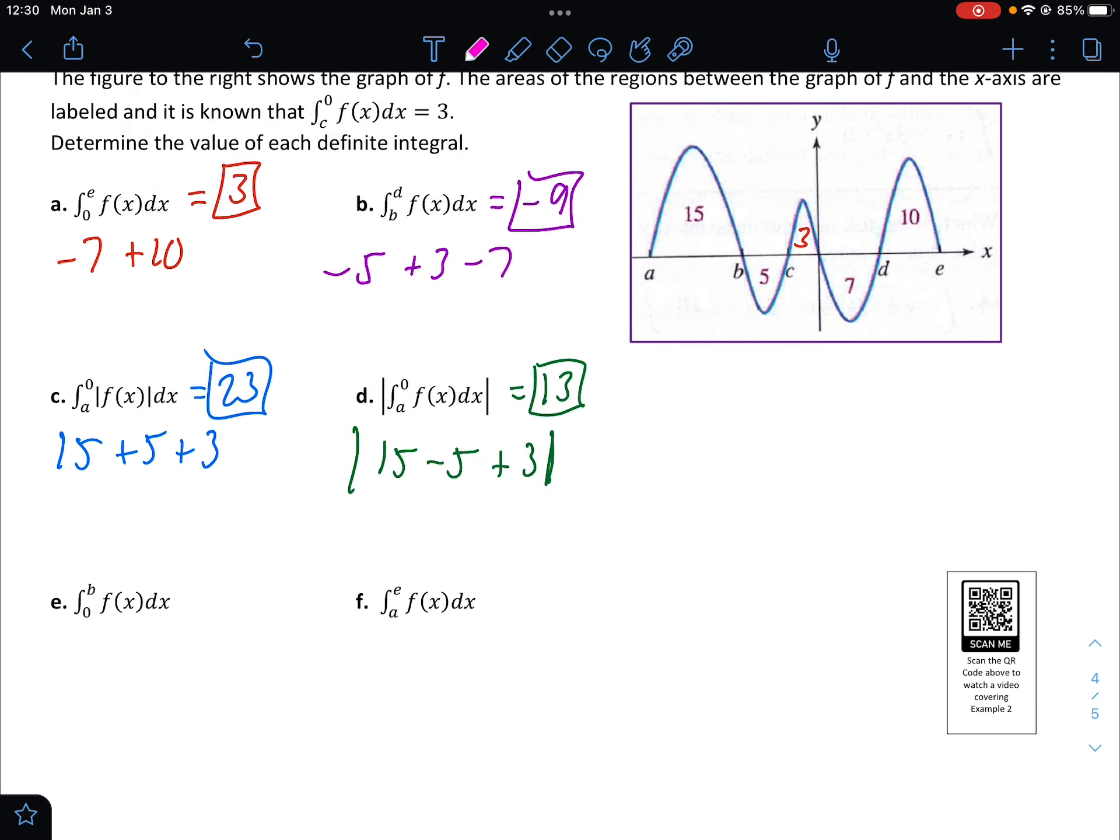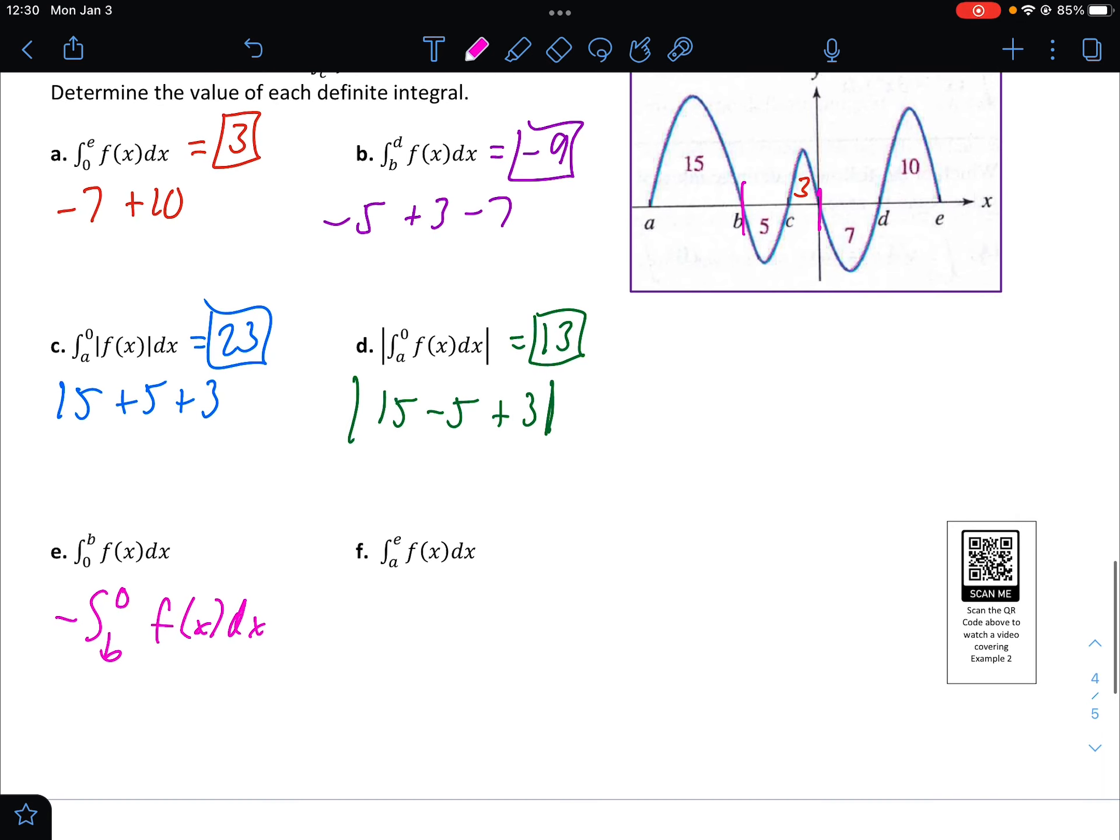Question E, the integral from 0 to b. So this is what we talked about with that one property where we can flip it by going from b to 0 and making it negative. So it would be negative. The integral from b to 0 would be negative 5 plus 3. So it's negative negative 2, or 2.